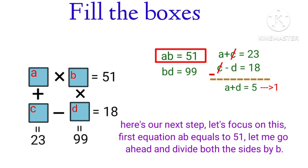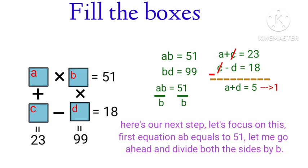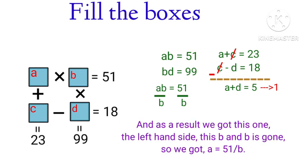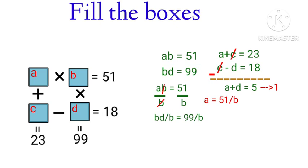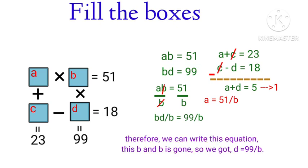Let's focus on the first equation: A times B equals 51. Dividing both sides by B, the B's cancel and we get A is equal to 51 divided by B. Likewise, from the second equation B times D equals 99, dividing both sides by B gives us D is equal to 99 divided by B.